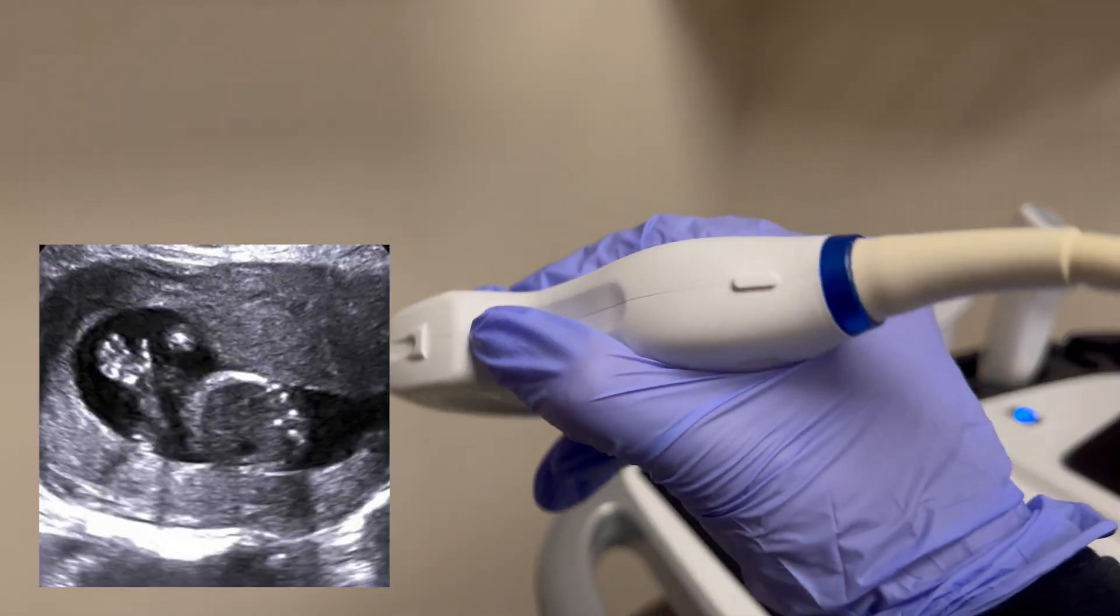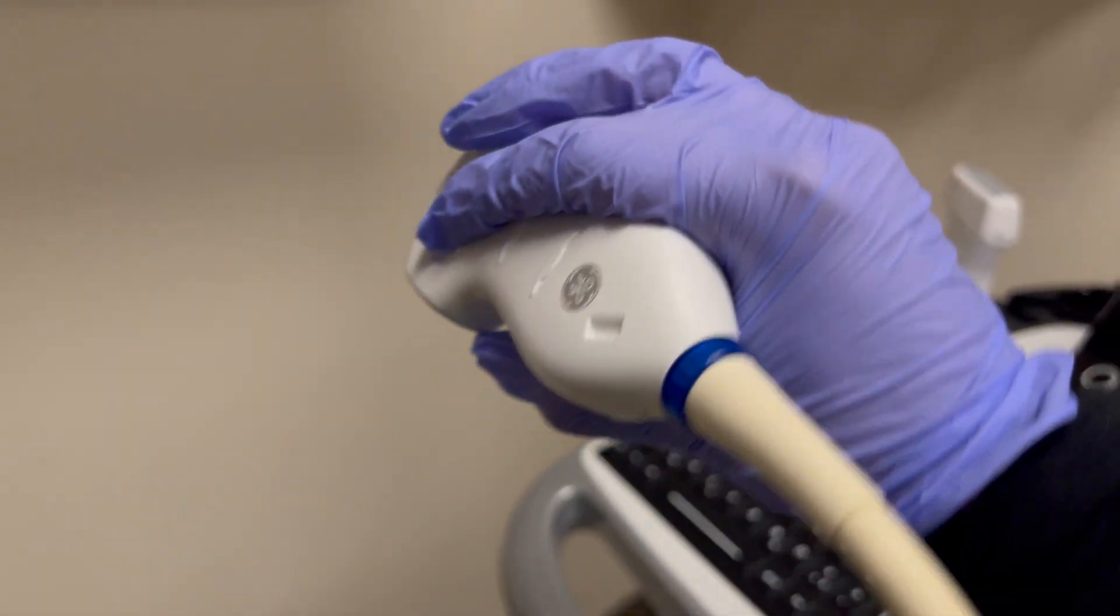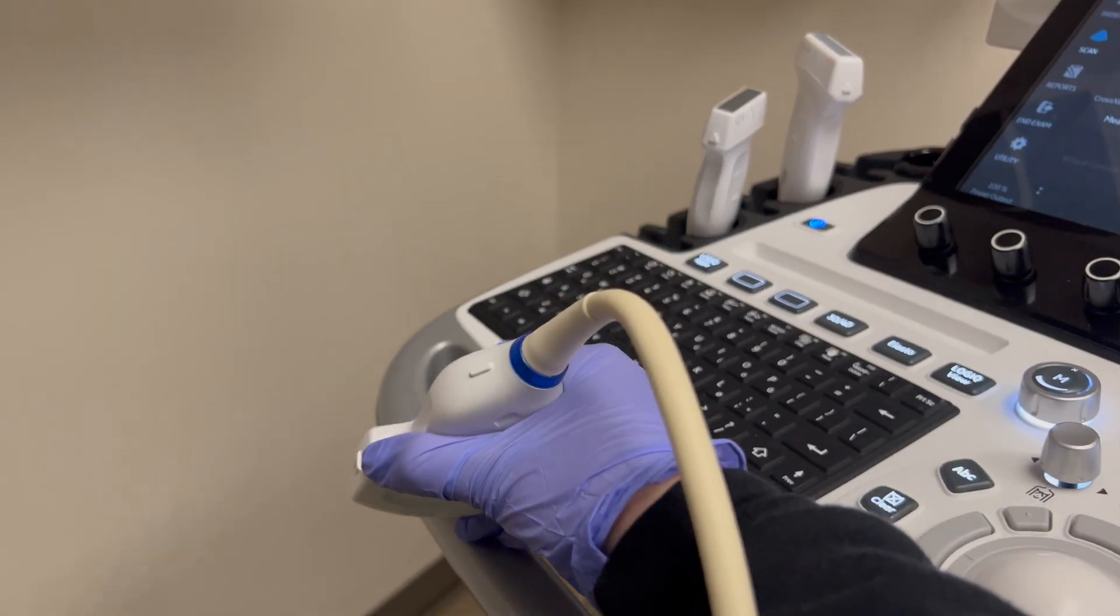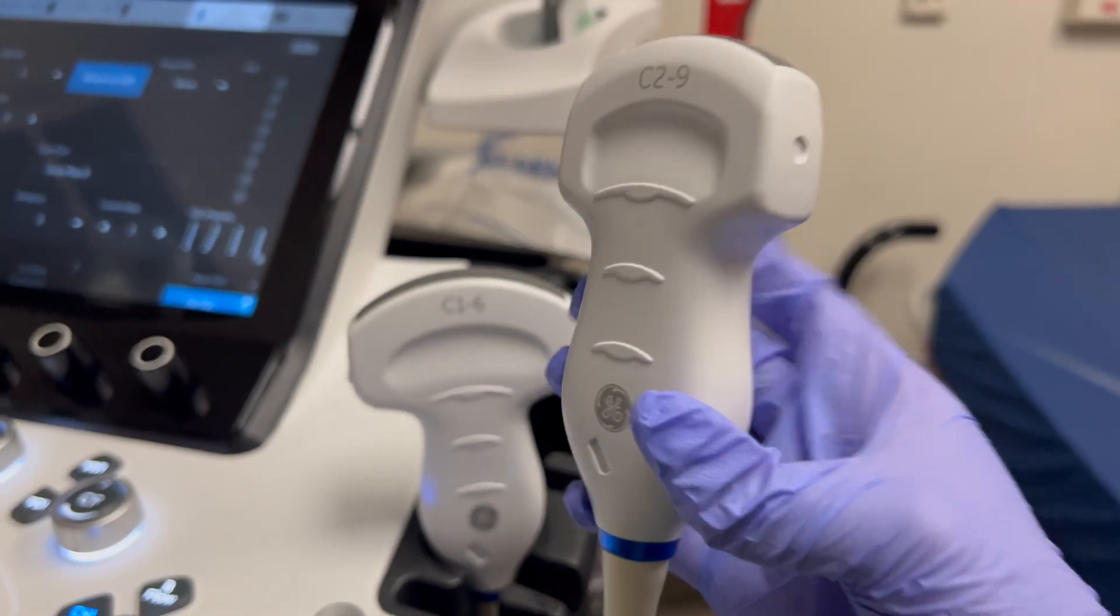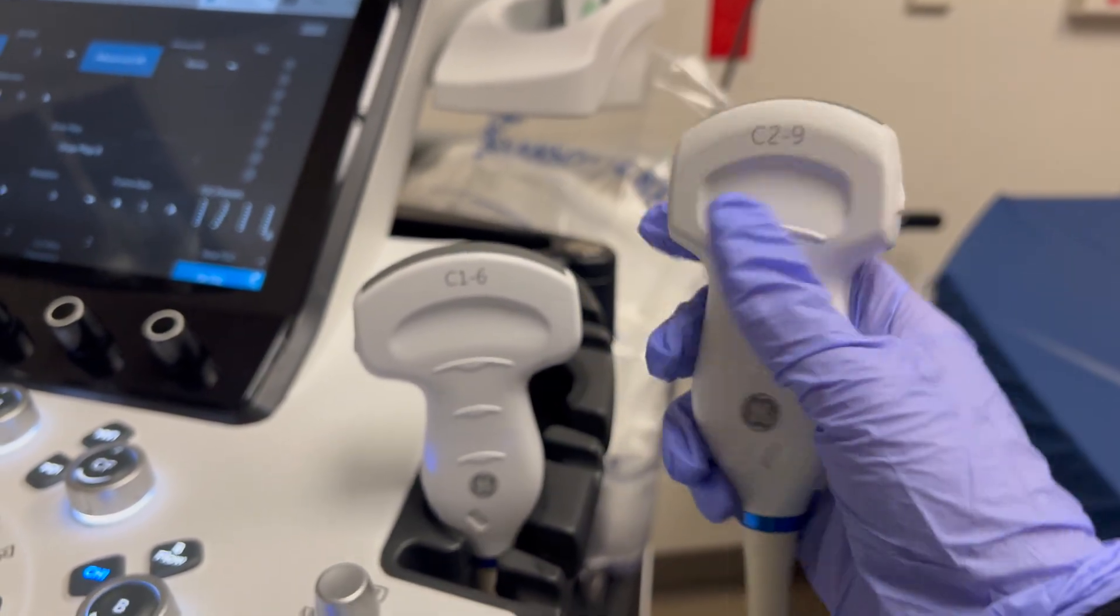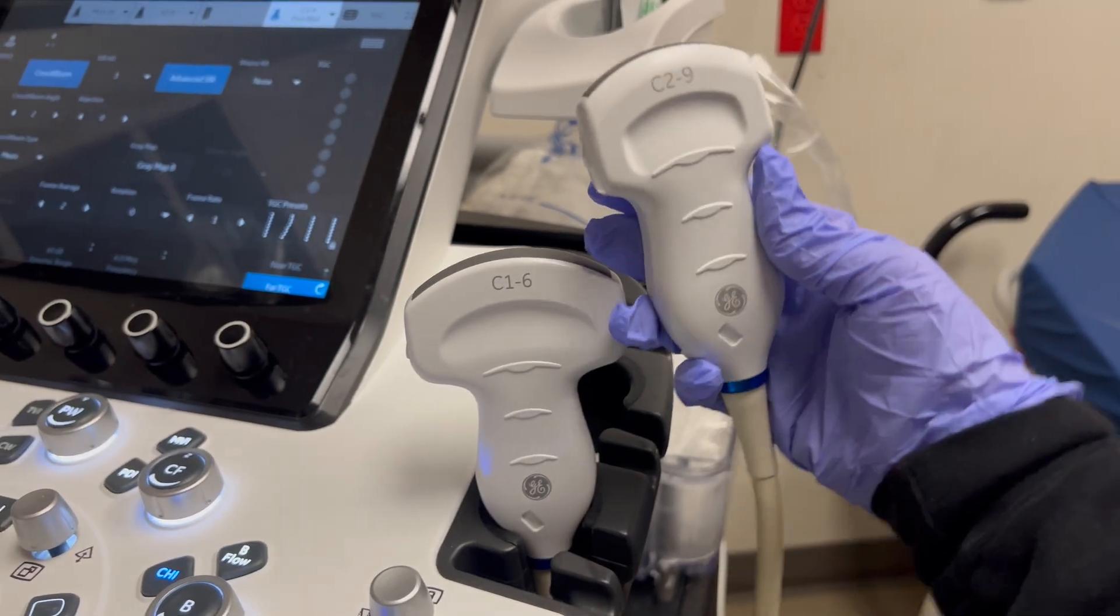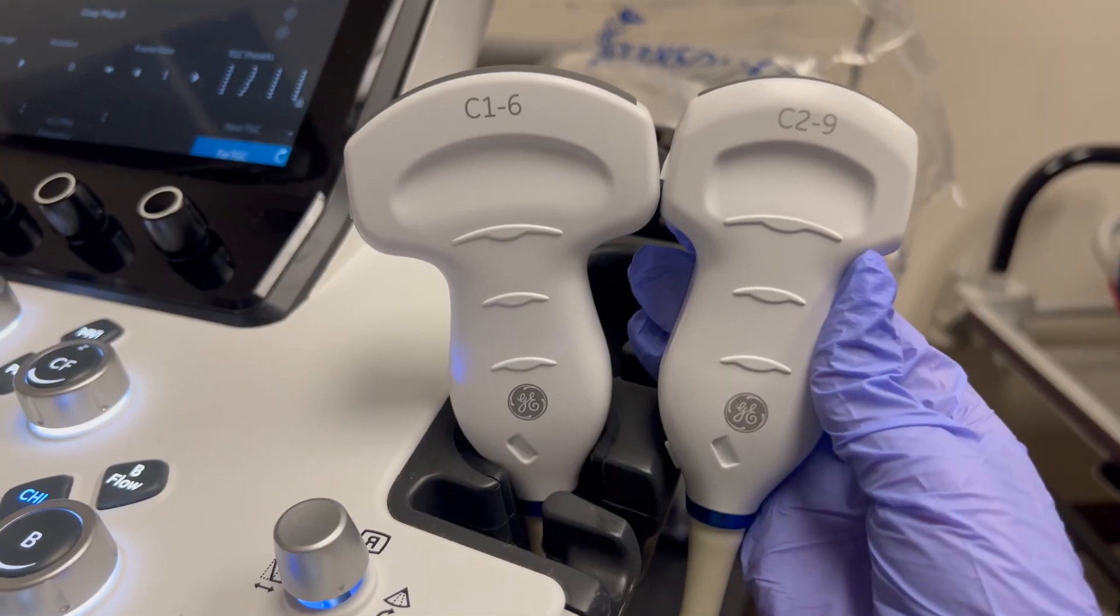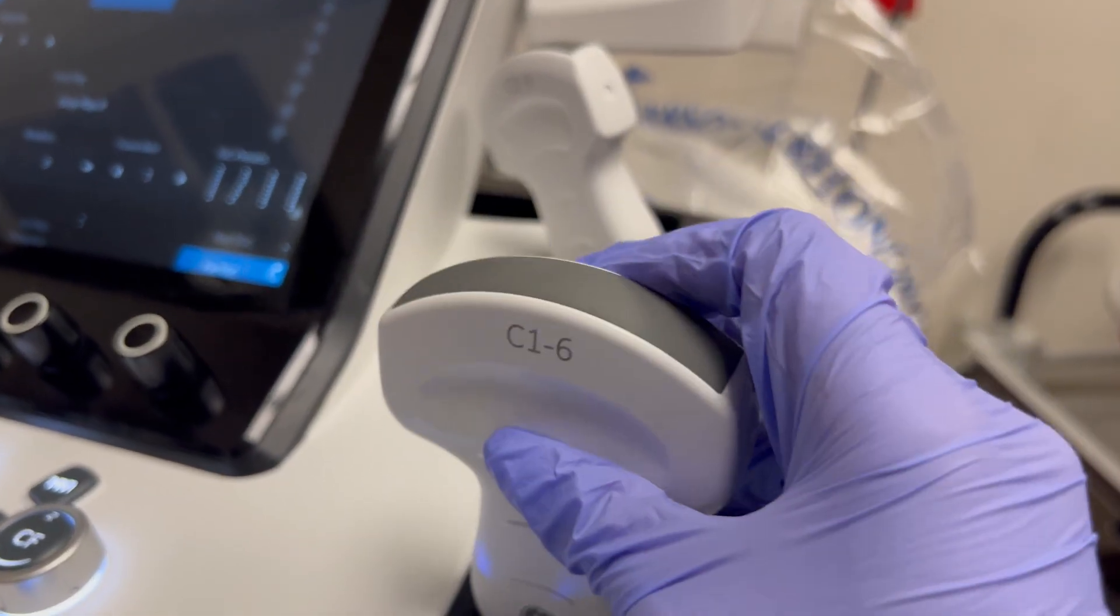To go into transverse you're going to have the notch to the patient's right, and to go sagittal you're going to have the notch facing up towards the patient's head. You're just gonna hold these probes as close to the bottom as you can because they are big clunky probes. This is the most common probe that you're going to use for a lot of your exams in the hospital and in outpatient settings.